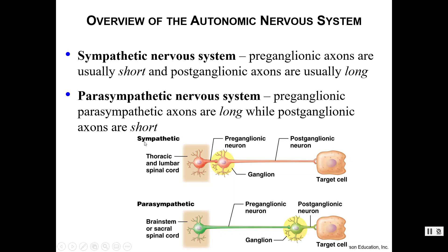If we are talking about the sympathetic division, the preganglionic neuron's axon is very very short while the postganglionic axon is very very long. If we look at the parasympathetic it is the exact opposite — the preganglionic axon is very long but the postganglionic axon is very very short.